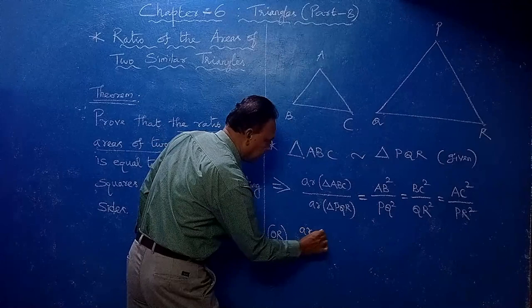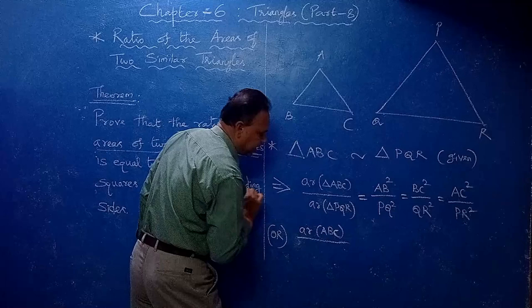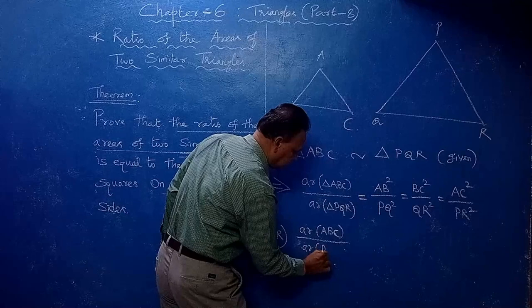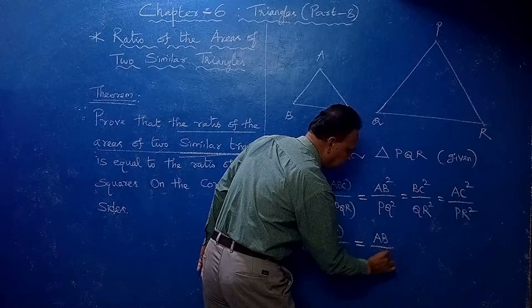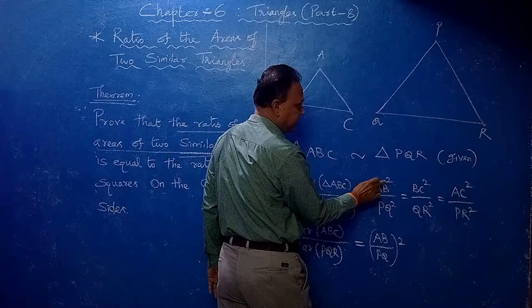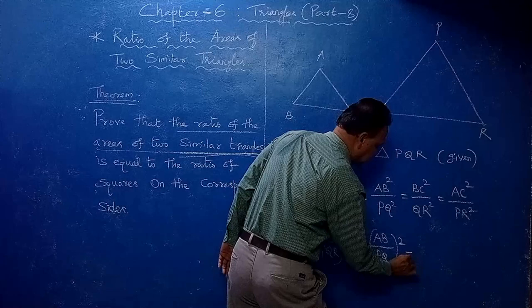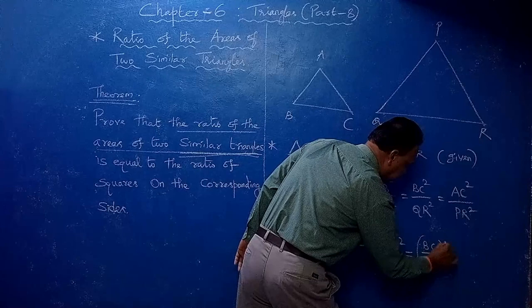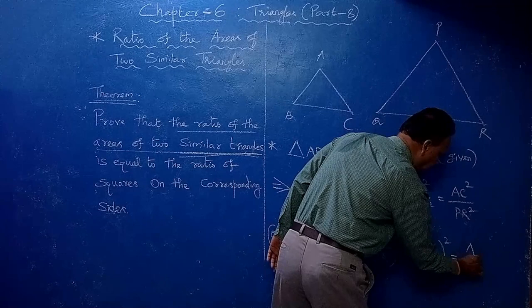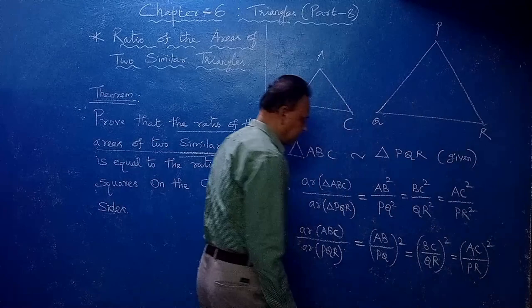Or you can write it like this also: area of Triangle ABC by area of Triangle PQR is equal to (AB by PQ) whole squared, which equals (BC by QR) whole squared, which equals (AC by PR) whole squared. Instead of writing the squares separately, you can write them as whole squares. Both ways you have to know.